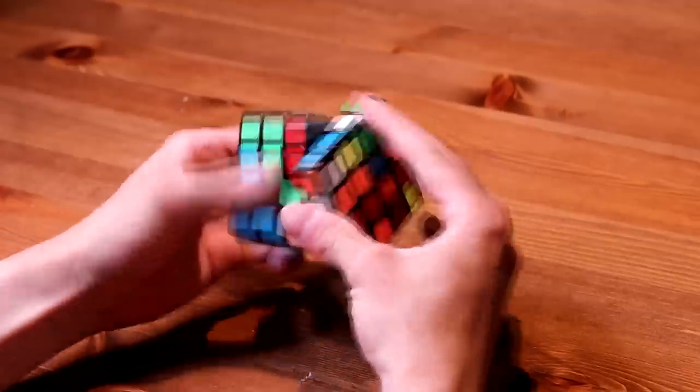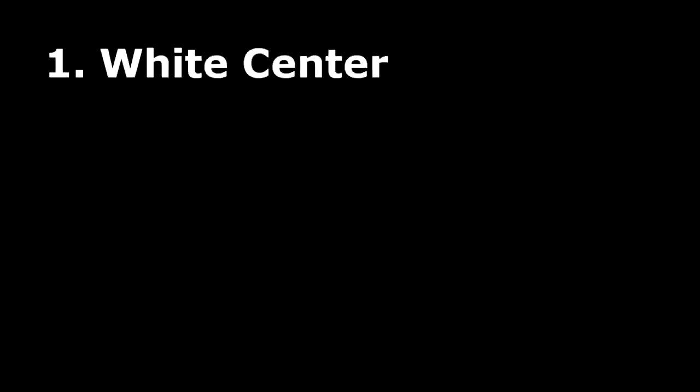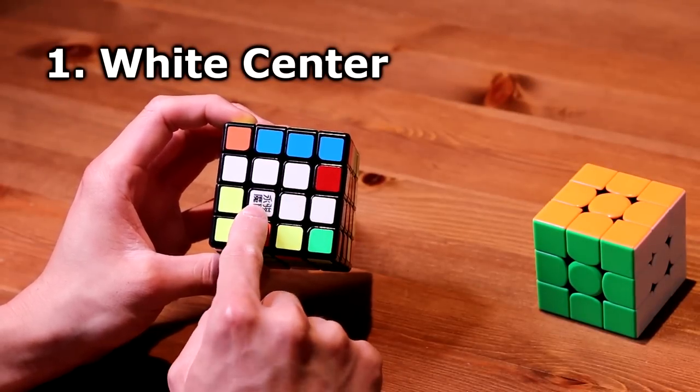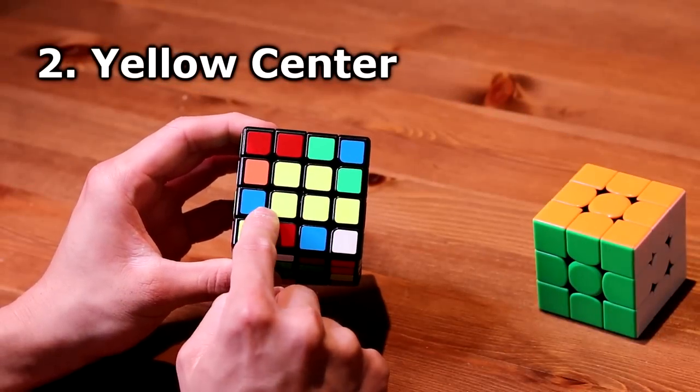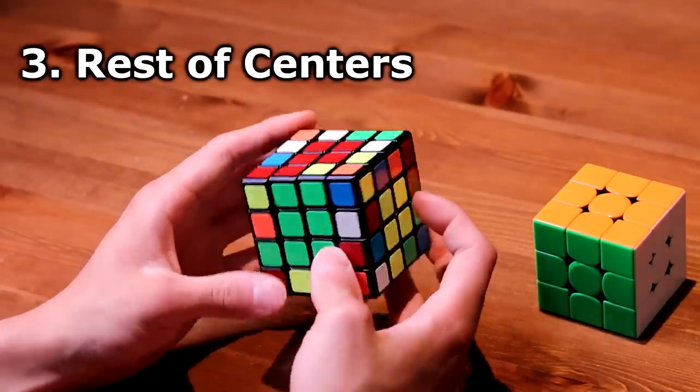Now let's scramble this cube up. Let me show you what the step looks like overall. First I'll get the white center, then the yellow center, and then all six centers will be solved.